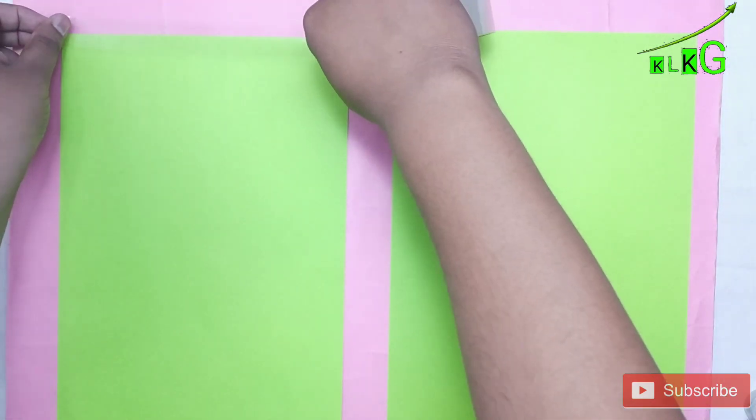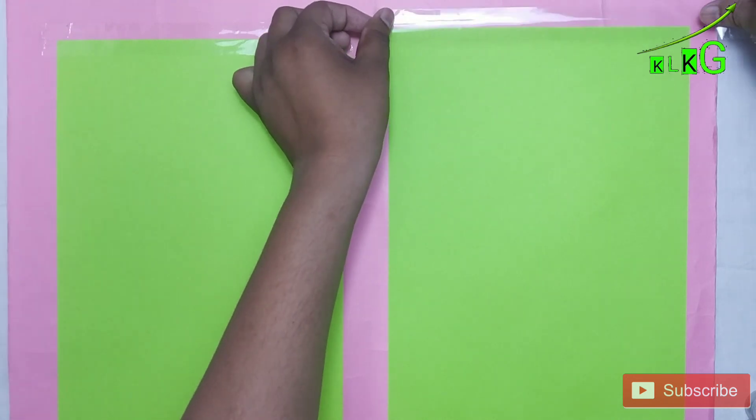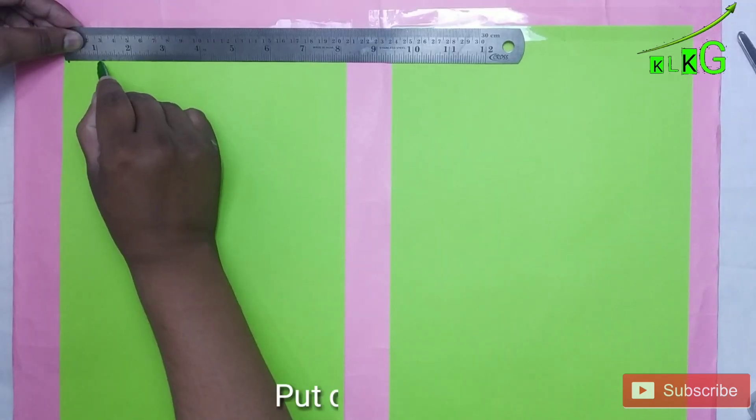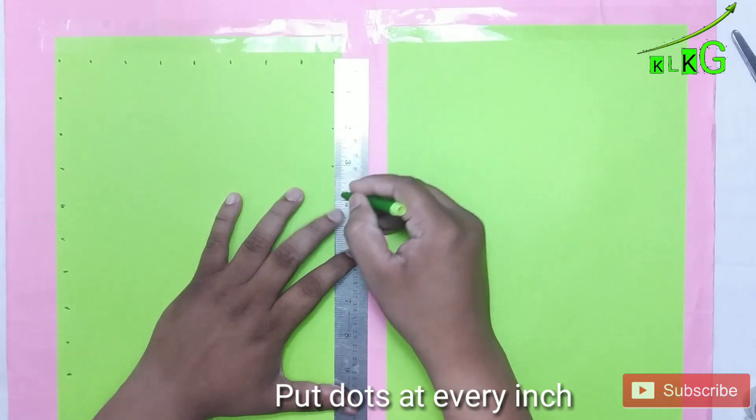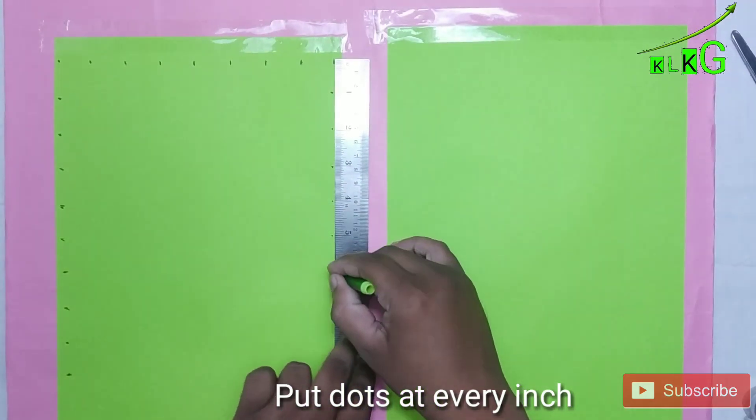Hello friends, we are going to make a working model of multiplication times table. For this, I have already pasted two green papers on a thermocol sheet and now I'm going to put dots at every inch like this.